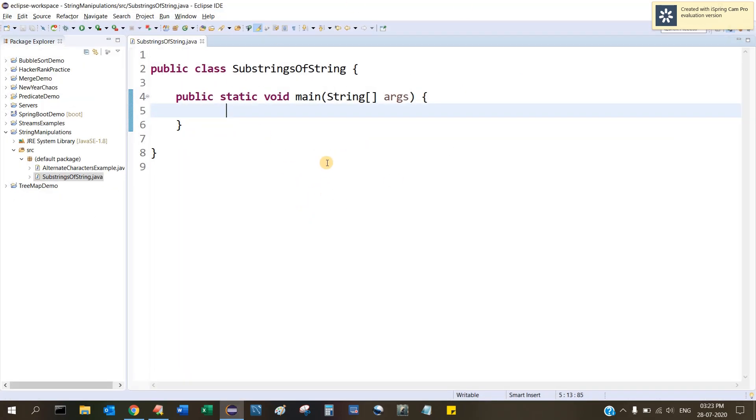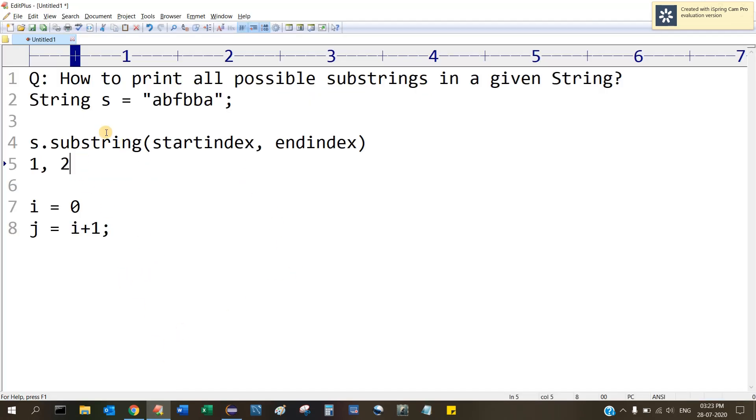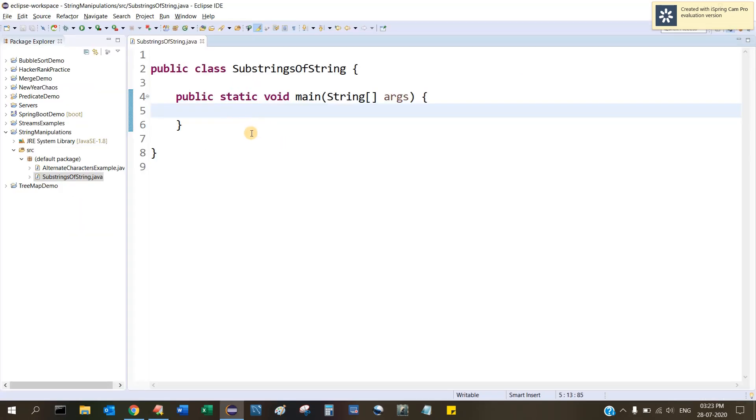Okay, so enough of talking, let's code. Here I am in my IDE - this is Eclipse - and I have created a class on substring of string. So let's code now. This is the string which I want to print the substring and I just need a for loop.